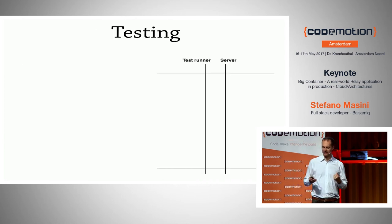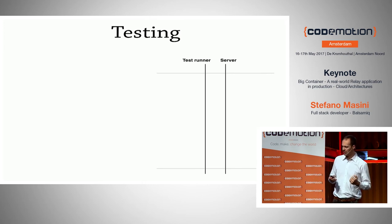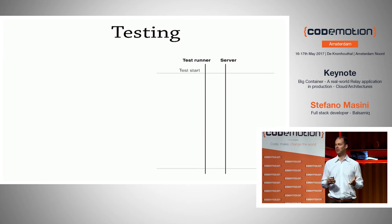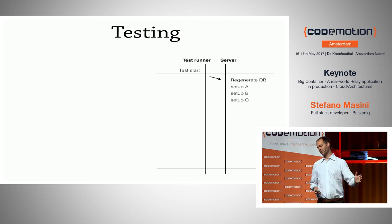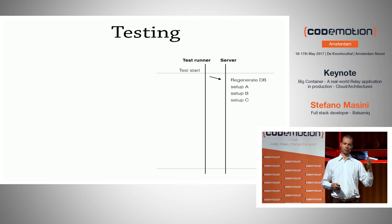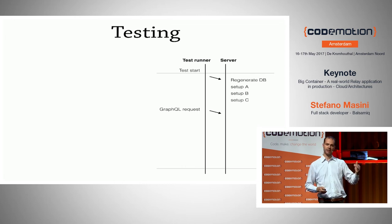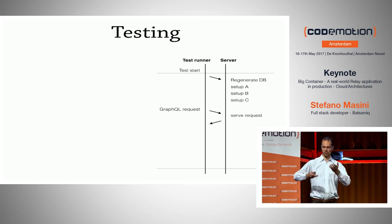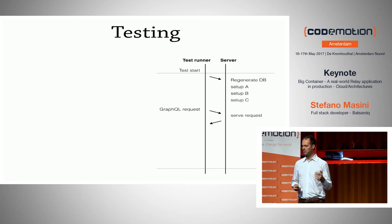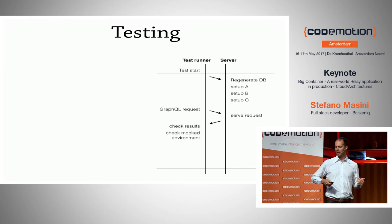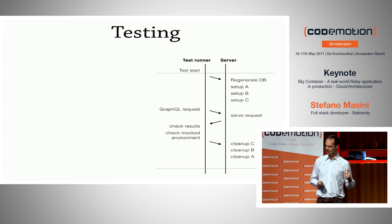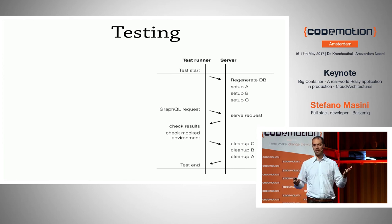The last topic is testing. We are really happy with the kind of testing we've done so far. The tests look really simple. A test starts, generates a real MySQL database on the fly from scratch, sets up all the fixtures, and then the test runner fires an actual GraphQL request to the server. The server serves the request, we check the results are the expected ones, maybe check a couple of mocked environments, then do a cleanup and go to the next test.